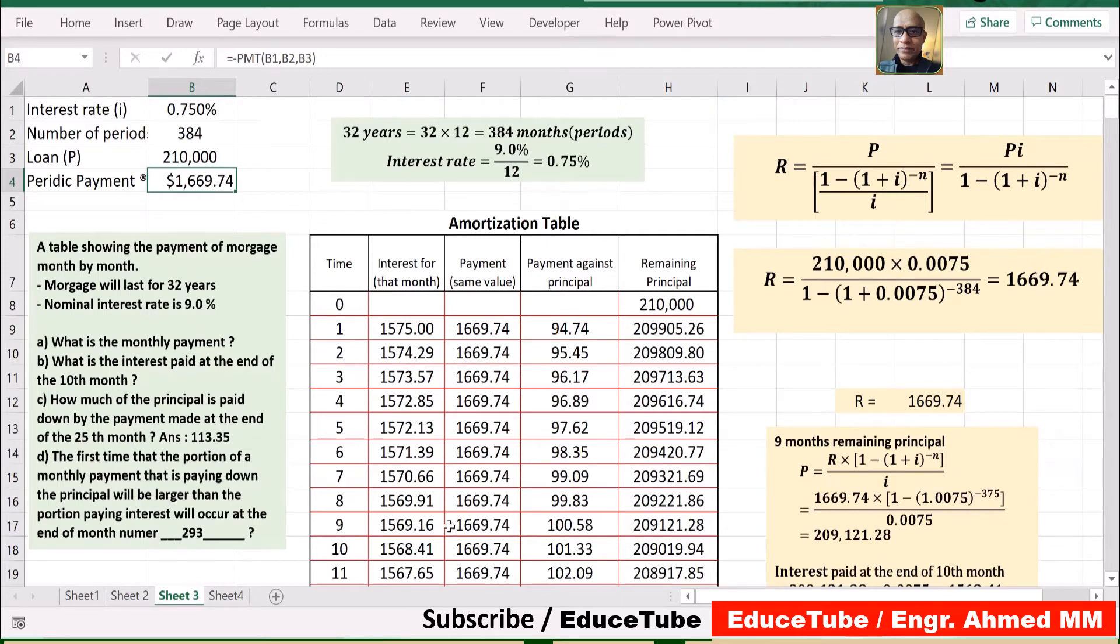The remaining lines of this schedule are found in similar fashion. We continue to calculate interest based on the remaining principal balance in this column. One important thing we have to see is that each month the amount of interest declines. If you look at this, each month the amount of interest declines: $1,574, $1,573. You see it's decreasing.